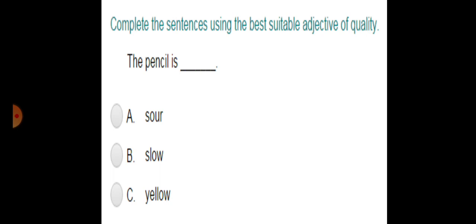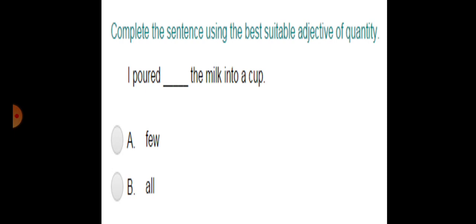Three adjectives diye gaye hain and your sentence is: The pencil is blank. Aapne yahan pe adjective of quality put karna hai whichever is appropriate. Now let's move towards the third one: I poured blank milk into a cup. You have to put here in the blank adjective of quantity.